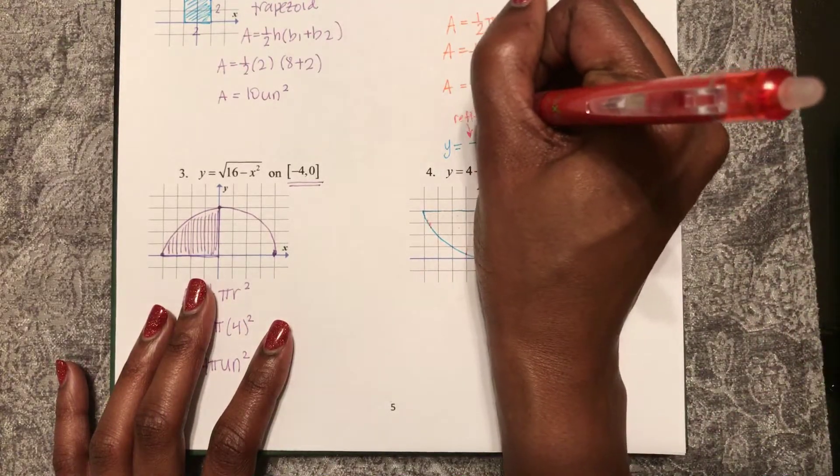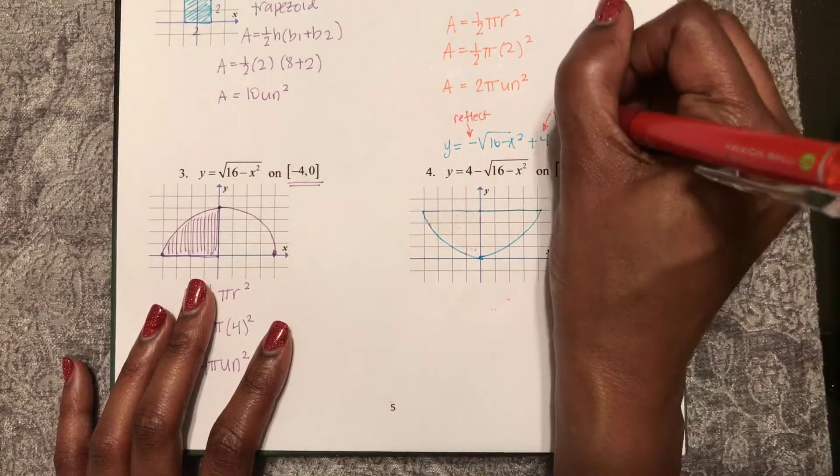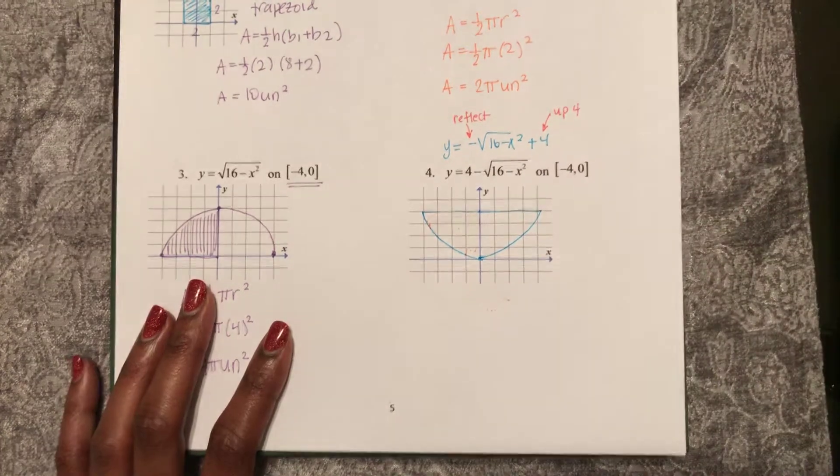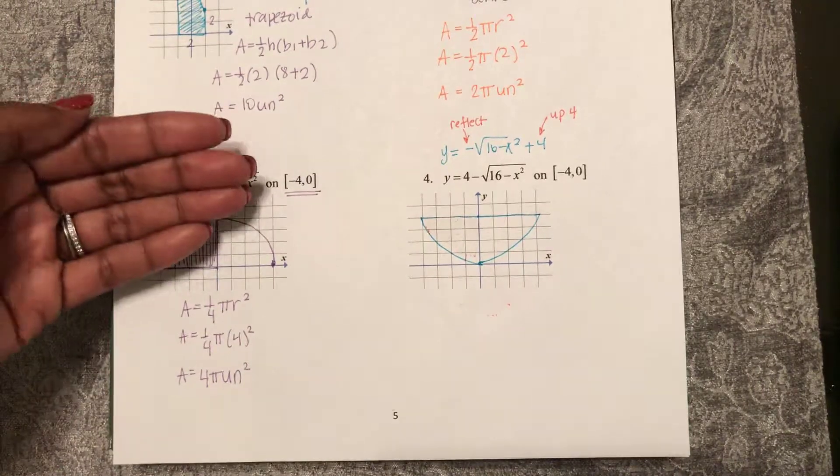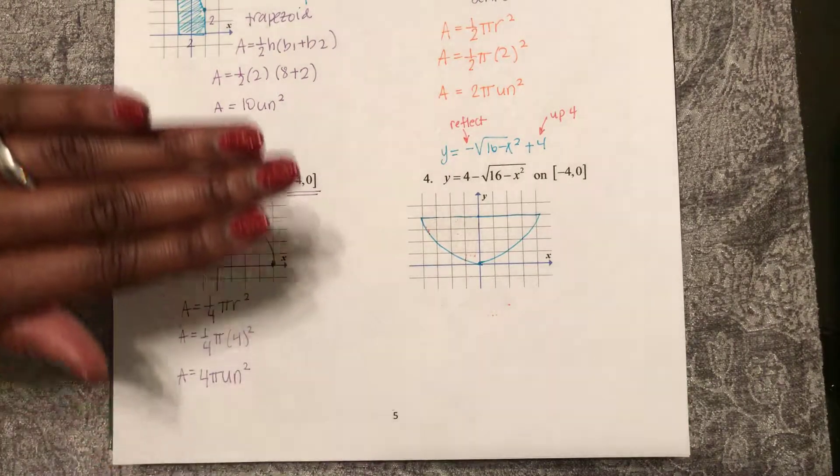So I rewrote it as negative square root 16 minus x squared. This means it reflects down, and then this shifts it up 4 units. So I took this same circle, reflected it down, and then shifted it up 4.